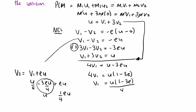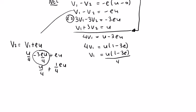So v2 = u/4 + eu/4, which factorises to v2 = (u/4)(1 + e). So the final expressions are v1 = u(1 - 3e)/4 and v2 = u(1 + e)/4.